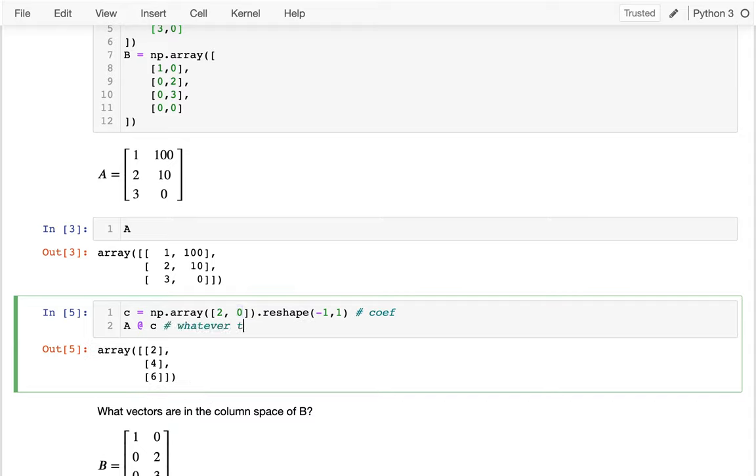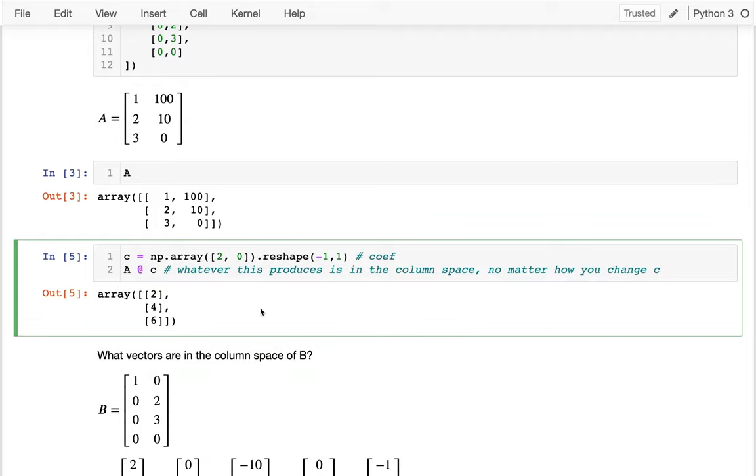And so really, whatever this produces is in column space, no matter how you change C. This is just another definition. So maybe I could say something like negative 1. Alright, negative 1, negative 2, negative 3. That vector is also in the column space. What if I say, I want one of each column? So I guess if I'm taking one of each column, I get 101. That was 1 plus 100. 2 plus 10 is 12. And then 3 plus 0 is 3. So this one is also in the column space. I could, if I wanted to, have like 100 of that second column and then subtract off one of the first. I could do that. This is an example vector in the column space.